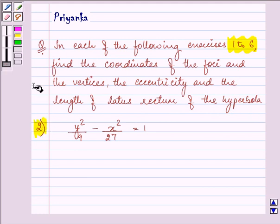Now, the equation which is given to us is y square by 9 minus x square by 27 is equal to 1.